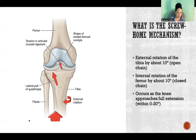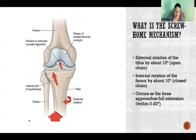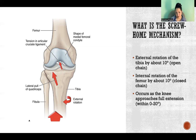Now let's take a closed chain example, like a squat. In that case, the limbs are fixed to the ground, so we would assume the tibia to be relatively stationary. It would be the femur that is moving relative to the tibia into extension. So the tibia is relatively fixed and the femur is internally rotating by about 10 degrees to achieve that proper alignment.